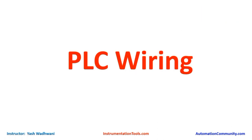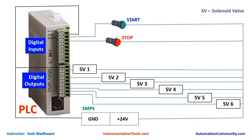Let us now understand the wiring required for this project. First we will understand the input wiring. We have only two inputs: to start and stop the process. We will connect the ground terminal of the SMPS to the source sync of the input. Then we take 24-volt supply and connect it to one terminal of the start button and stop button. The other terminal of the start button we connect to X0, and in ladder programming we will use X0 for starting and X1 for stopping the process.